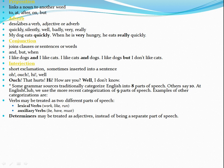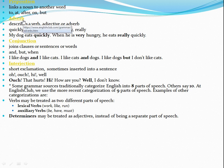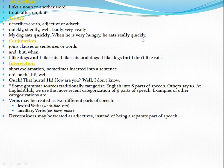Then adverb. An adverb adds to the meaning of a verb — it tells us clearly what the verb is doing. It describes a verb, an adjective, or sometimes another adverb. Examples: quickly, silently, well, badly, very, really. For example: 'My dog eats quickly when he is very hungry.' 'He eats really quickly.'